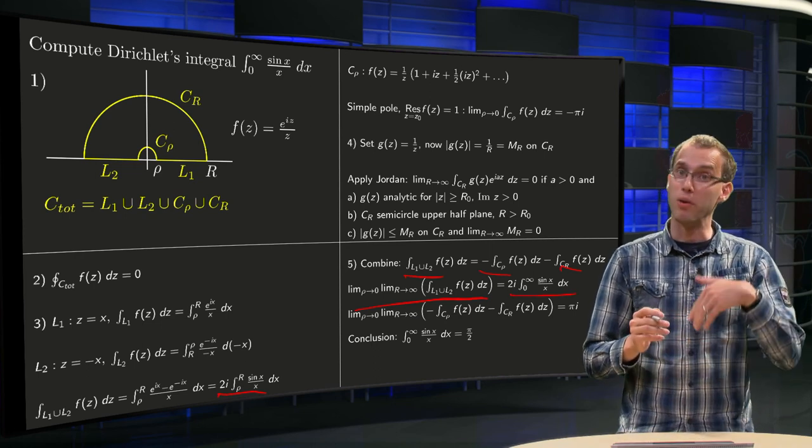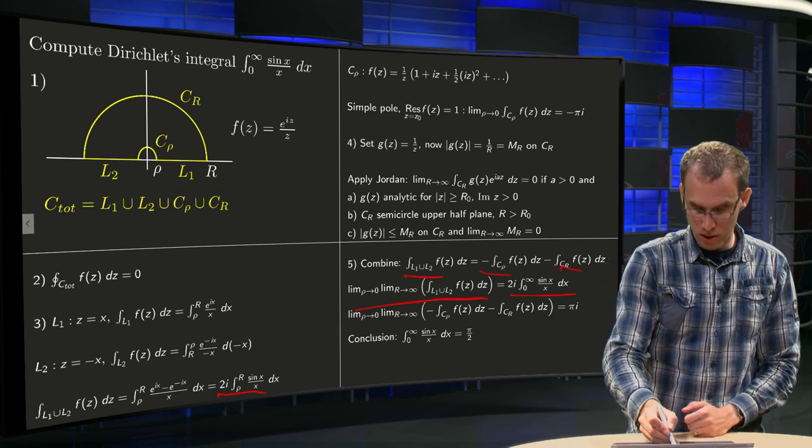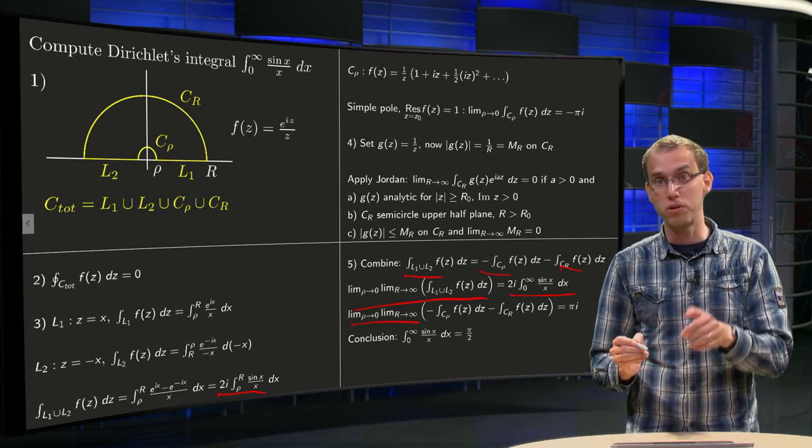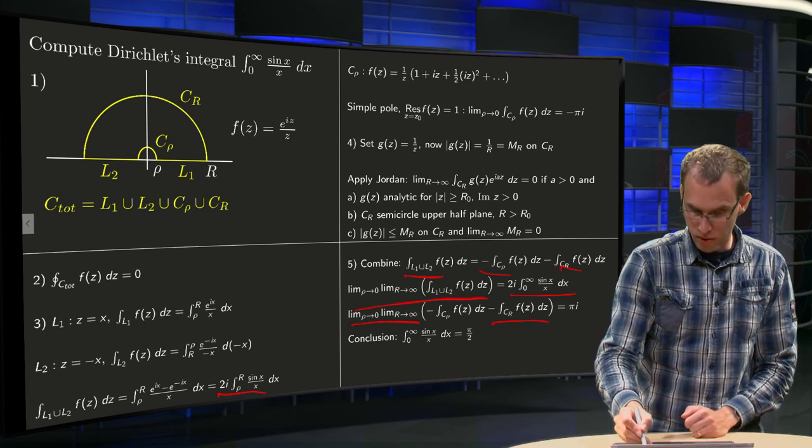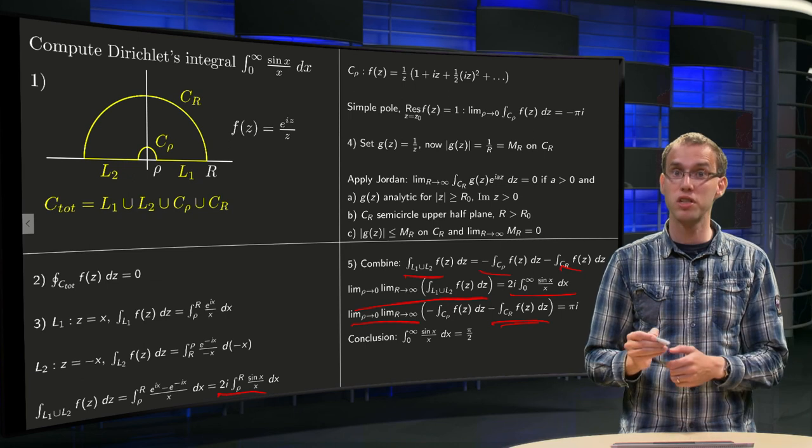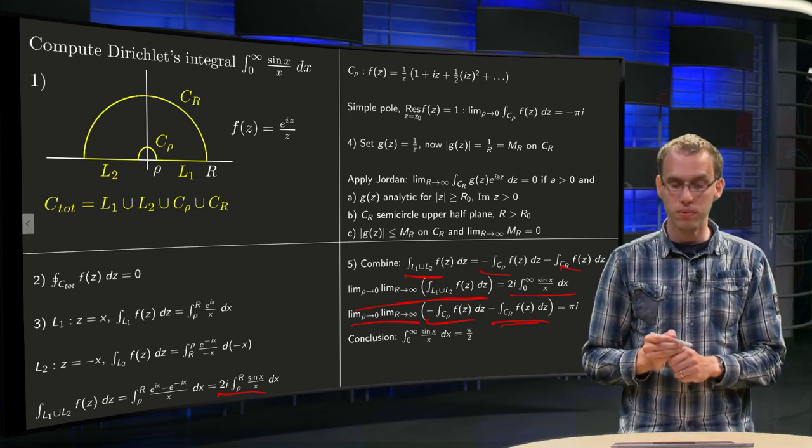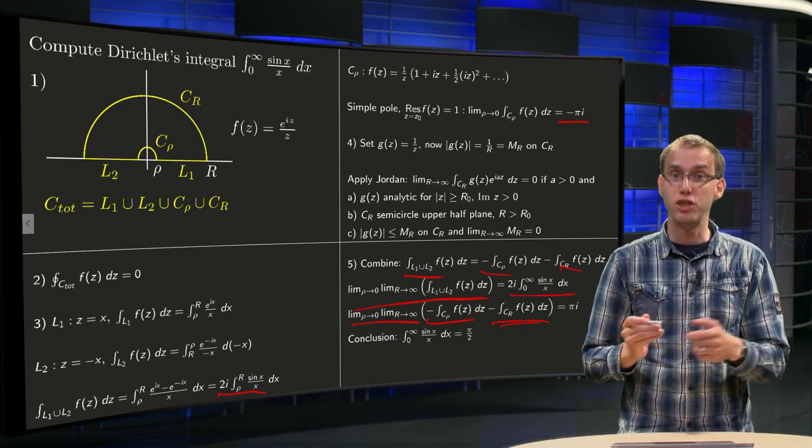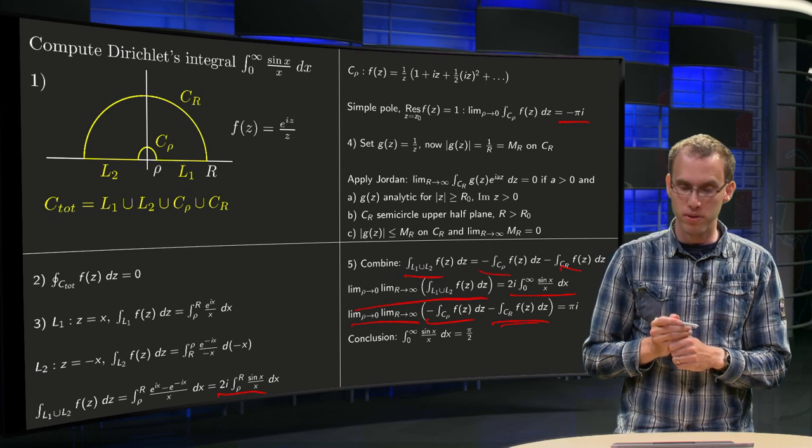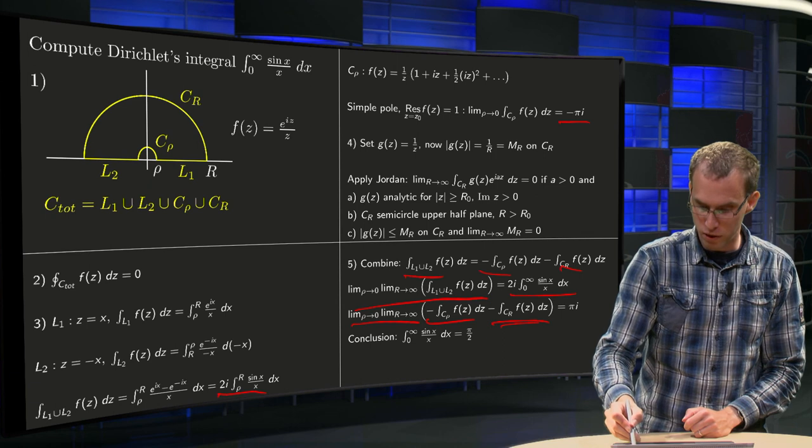So we take limits to infinity R and rho to 0 of this one, which just gives us 2i times integral 0 to infinity sin x over x, which is the one we want. And we also take limits on the right hand side, so take rho to 0 and R to infinity on the right hand side. While this second integral over here will vanish due to Jordan's lemma, which we showed in step 4, this first integral along c_rho equals minus pi i as we showed in step 3.